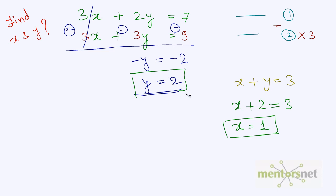So this is the main concept behind solving simultaneous equations. Firstly, you should name or number the equations. Secondly, perform operations on the equations to remove one of the variables so that you remain with only one variable in the resultant equation. Once you get the value of one variable, substitute it into another equation to find the other variable. That's how you solve simultaneous equations.